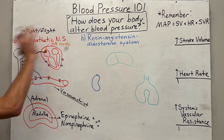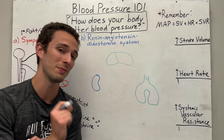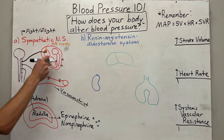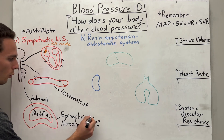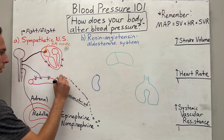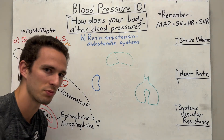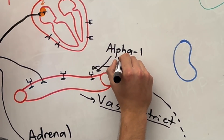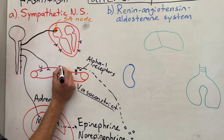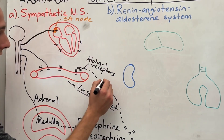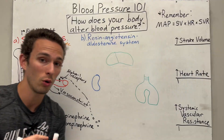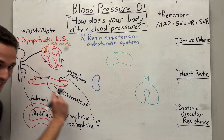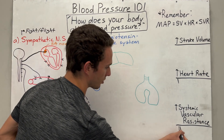In the fight or flight response, these hormones go through the bloodstream — meaning they go everywhere. They will go to the arteries and bind to receptors on the smooth muscle called alpha-1 receptors. When they bind, vasoconstriction will happen as well. So not only does the sympathetic nervous system directly talk to the arteries to constrict them, but the hormones released by the adrenal medulla do the same thing, thus increasing systemic vascular resistance.